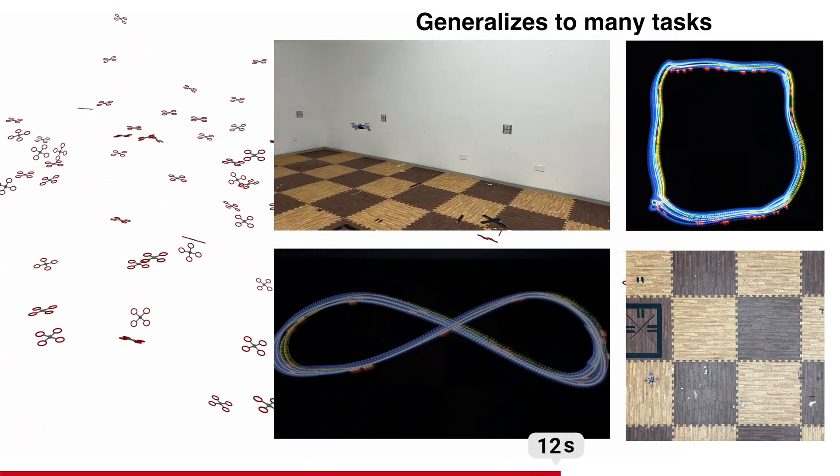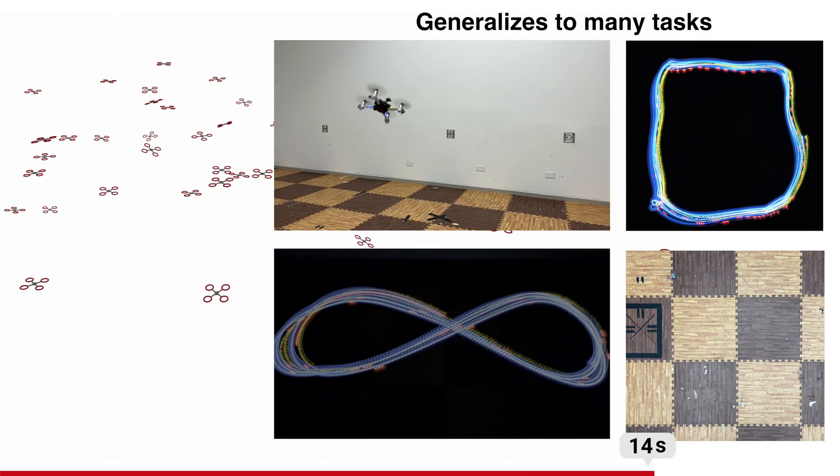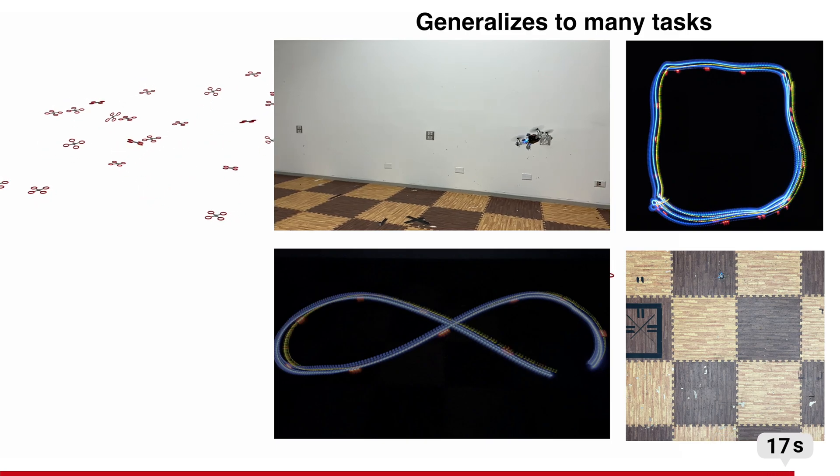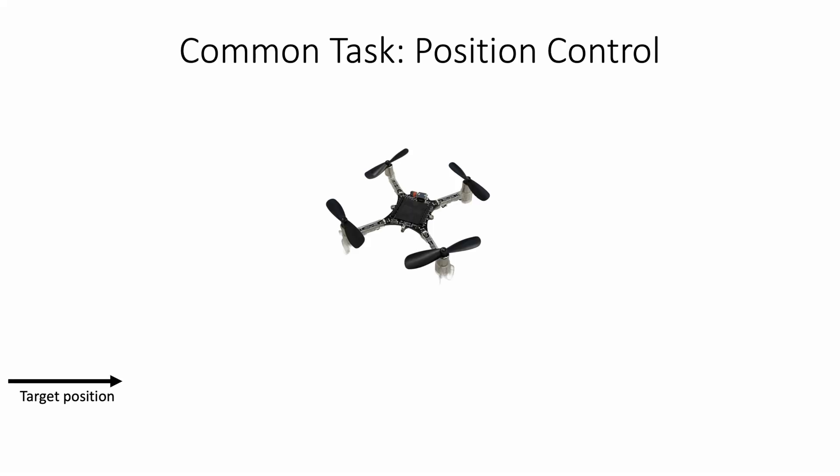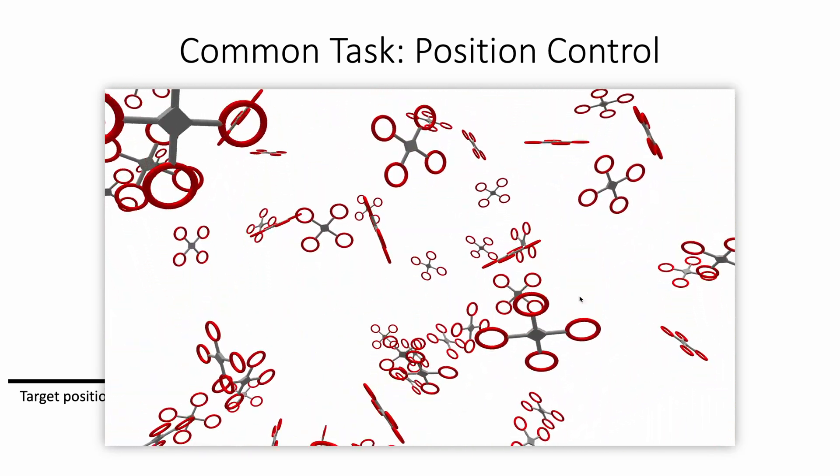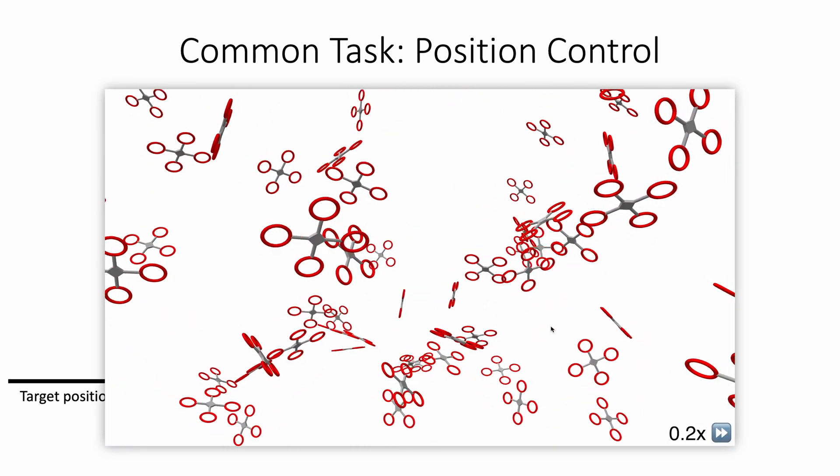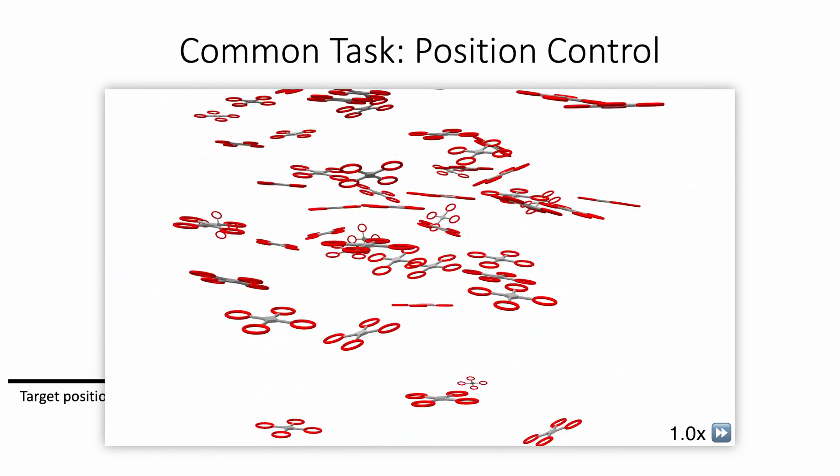The trained end-to-end control policies generalize to a multitude of downstream tasks like trajectory tracking. One of the most common tasks for quadrotors is position control. Starting from an arbitrary initial state, the controller is supposed to fly the vehicle to an arbitrary position.